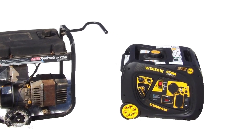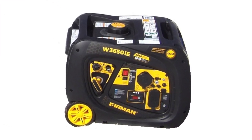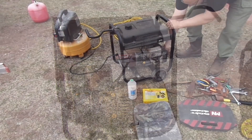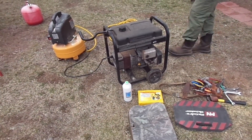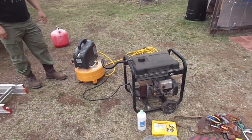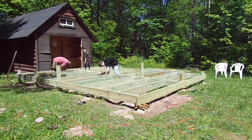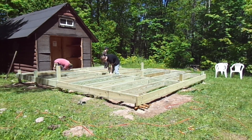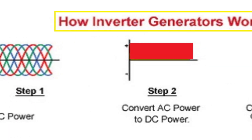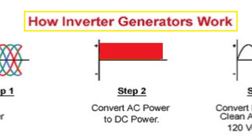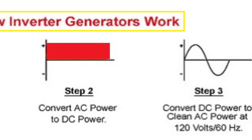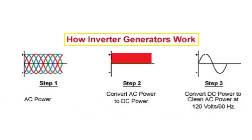So what is an inverter generator? Well, first let's talk about a conventional or regular generator. A regular generator is a combustion engine that spins a generator and produces raw electricity that comes out of the outlets so you can power things up. An inverter generator is similar in that it has a combustion engine that spins a generator and produces electricity, but the inverter generator takes that raw AC power and turns it into DC power, and then turns it back into AC power again — and that's what you find at the outlets.